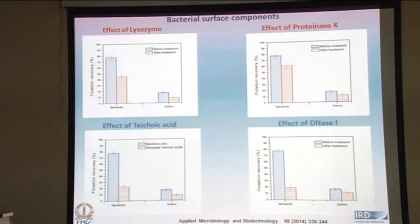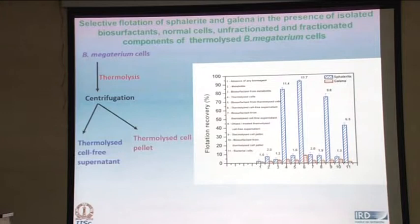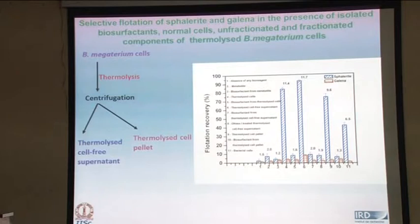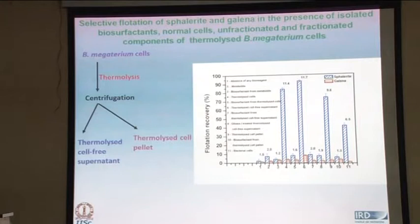We have done a lot of protocols in terms of thermal treatment, and recoveries of about 90% for sphalerite are obtained in the presence of the soluble component of the thermalized cells, with a selectivity index of 11.7. You will be able to concentrate the component of interest by these protocols and get enhanced selectivity.